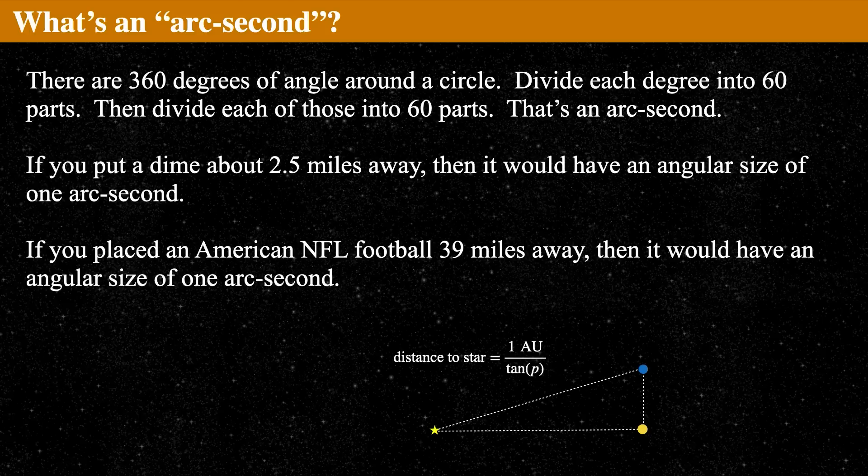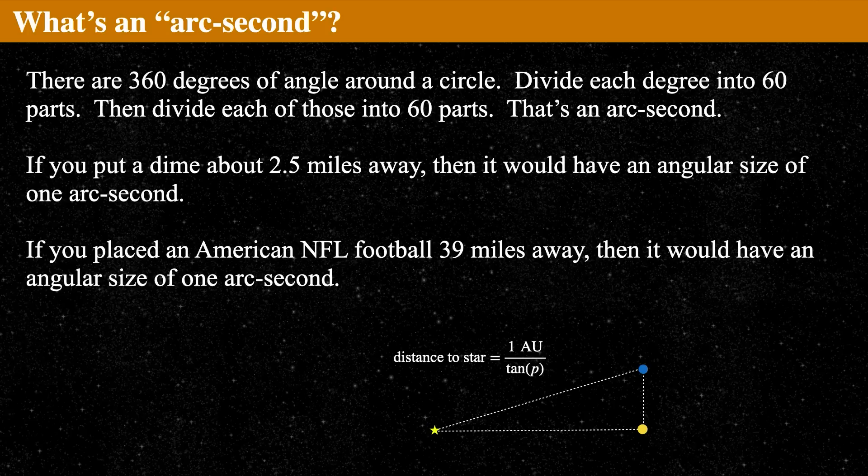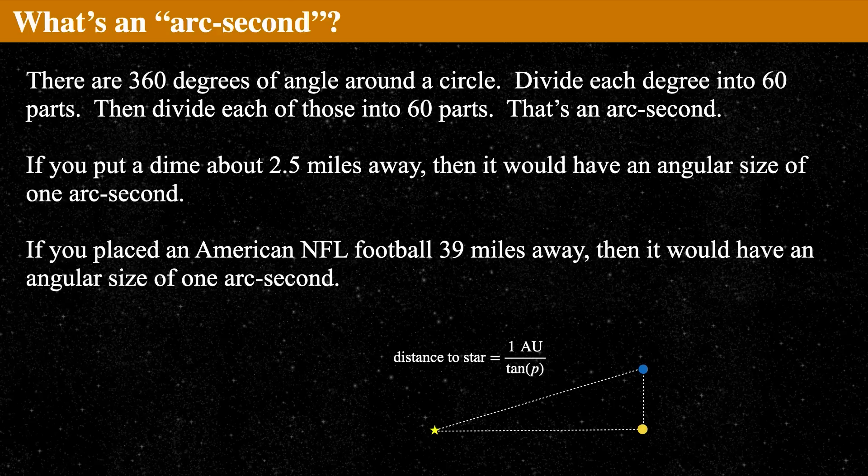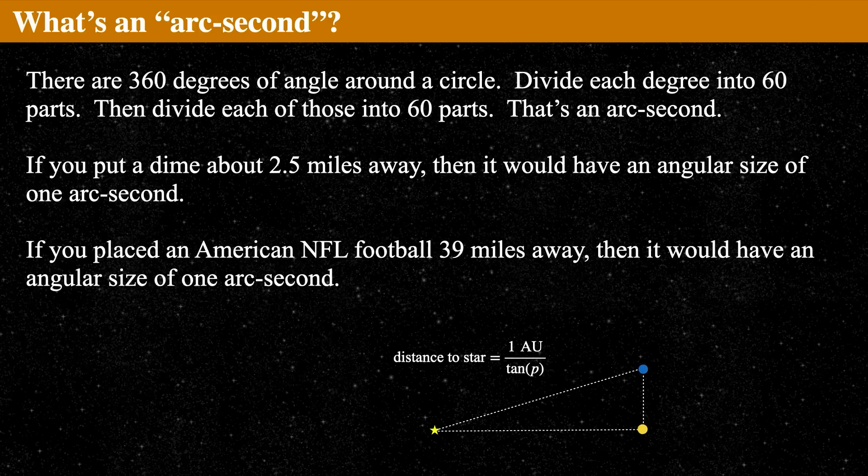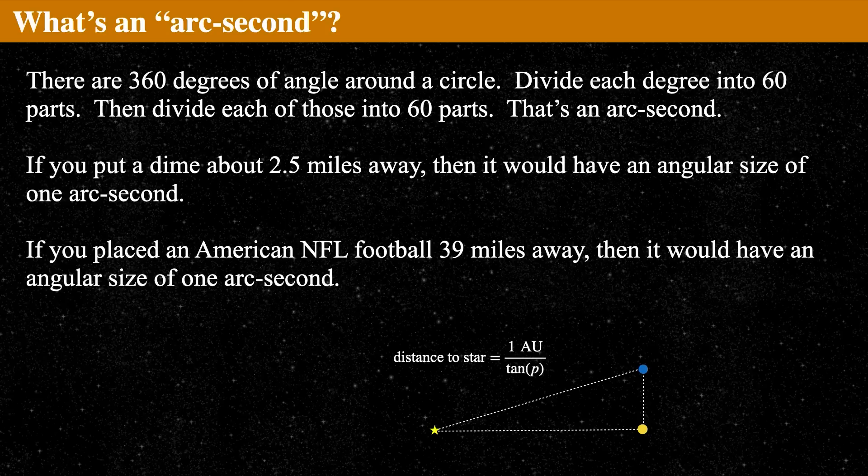Your thumb held at arm's length is about a degree across. If you make 60 even marks across it, those would each be one arc minute. So every degree can be broken up into 60 arc minutes. And every arc minute can be broken up into 60 arc seconds. So imagine 3,600 little marks across the back of your thumb.